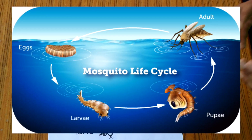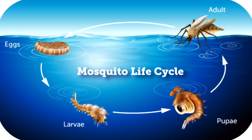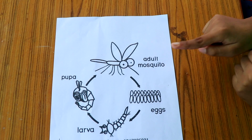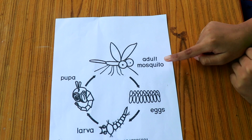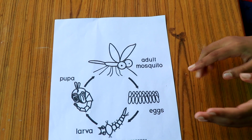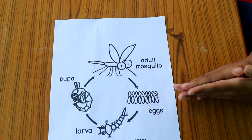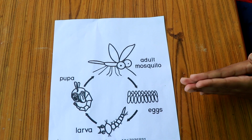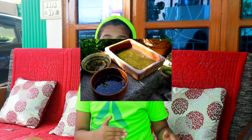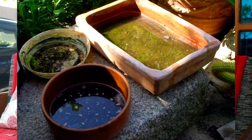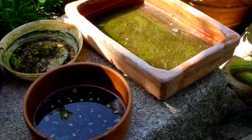A mosquito can lay approximately 100 to 200 eggs. Mosquitoes can lay eggs anywhere — inside the home or outside — but there must be water, because they need water to lay eggs.